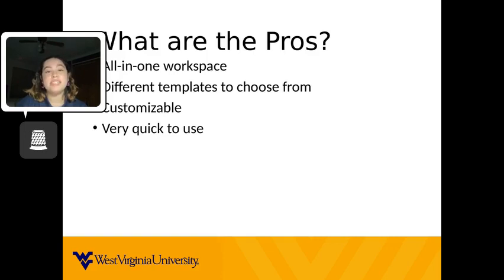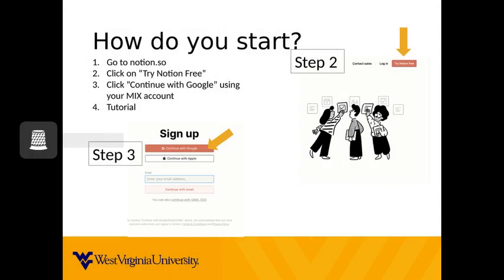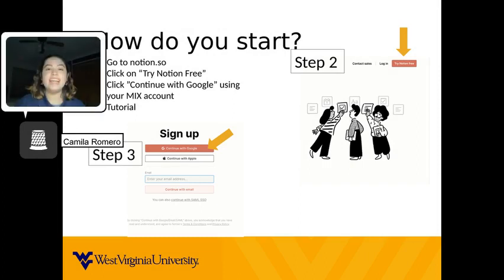It is very quick to use once it is set up. You can easily add and get rid of sections on your Notion workspace. If you accidentally delete something, you can always undo it — on paper, unfortunately you don't have that capability. Signing up for a Notion account is easy. As a bonus, if you sign up with your Mix email, you get upgraded to the Pro Plan for free. Step 1 is to go to Notion.so, then click on Try Notion for free, then click on Continue with Google using your Mix email account.